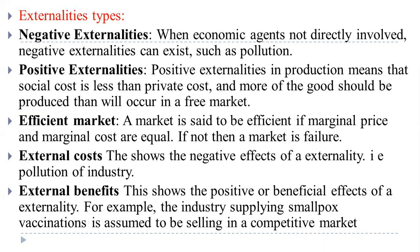Now we see the types of externalities. The first is negative externality. When economic agents not directly involved are affected, negative externalities can exist — such as pollution. Pollution is the example of negative externalities. Positive externalities in production means that social cost is less than private cost, and more goods should be produced than will occur in a free market. So if social cost is less, there will be less depletion or less exhaustion of resources — that is the point under positive externalities.